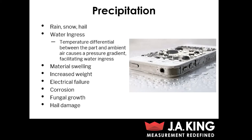The next type of testing we're going to touch on is precipitation testing. This can involve really any type of precipitation, including rain, snow, and hail. One of the main reasons that we actually undergo precipitation testing is to check for water ingress. You can see here a picture of a smartphone — obviously smartphones and other electronics, you want to try and reduce water ingress as much as possible, and precipitation testing is a good way of going about this.